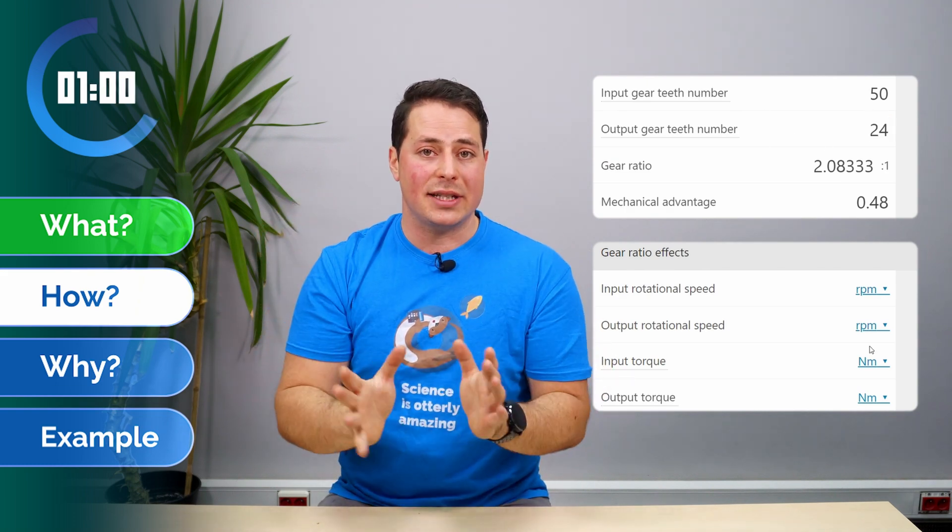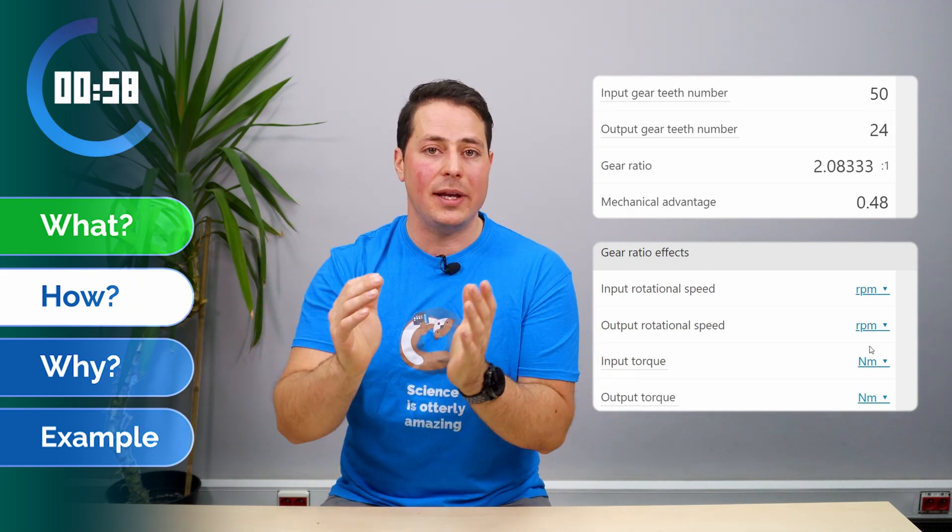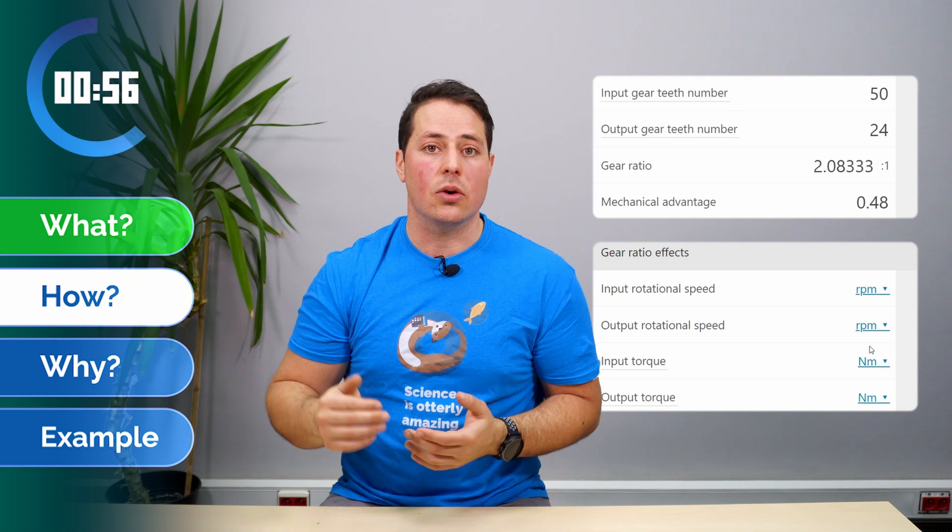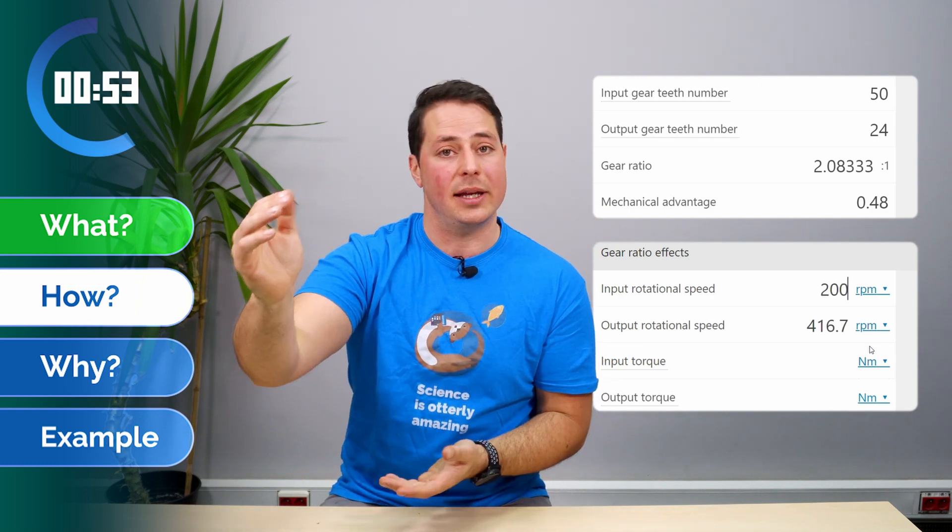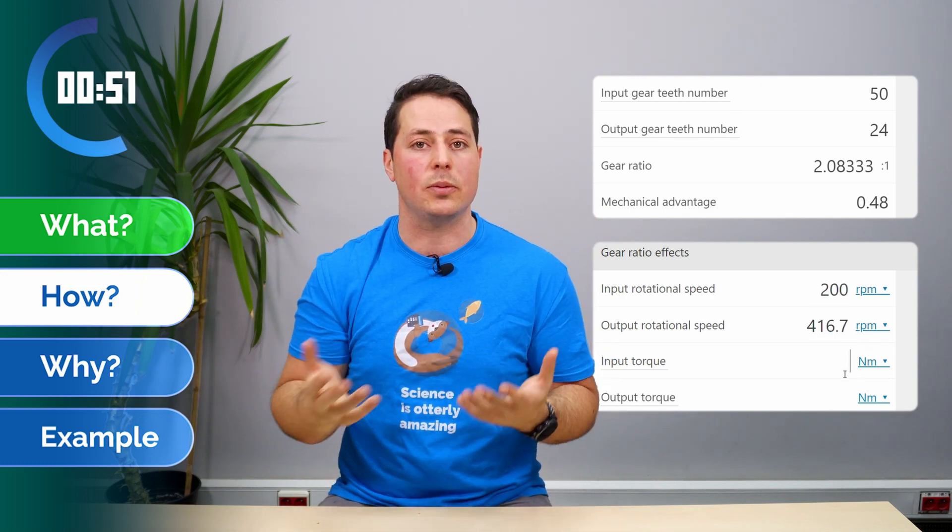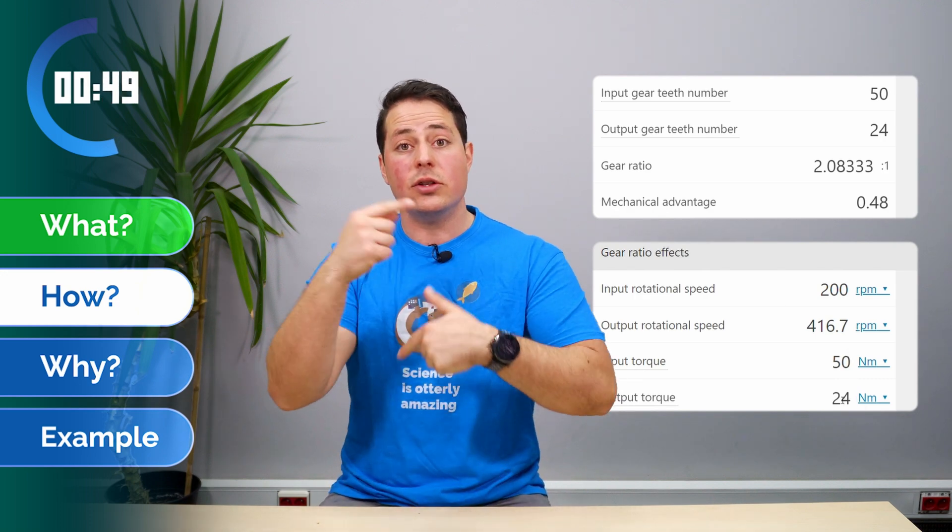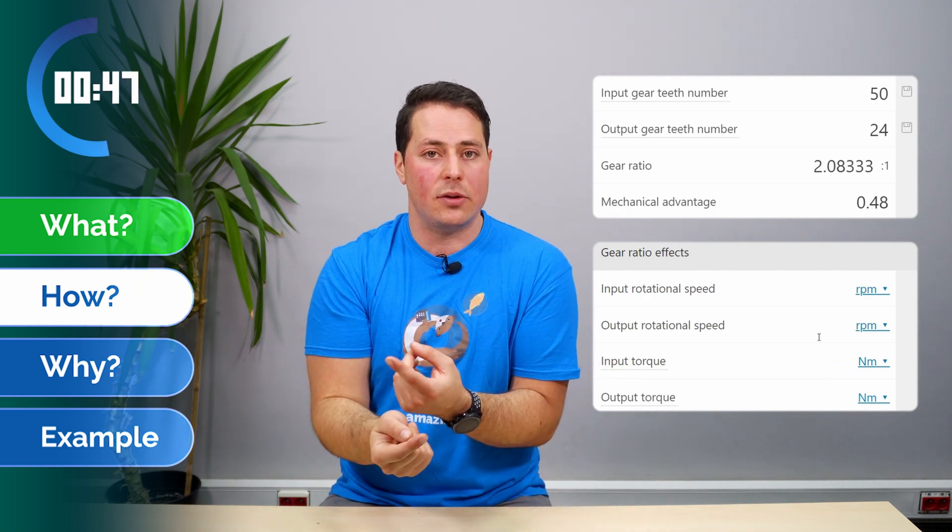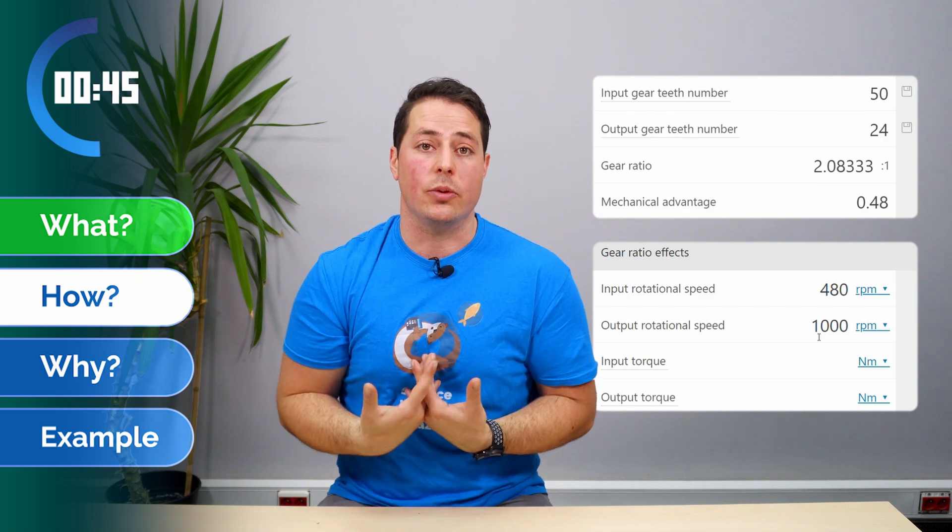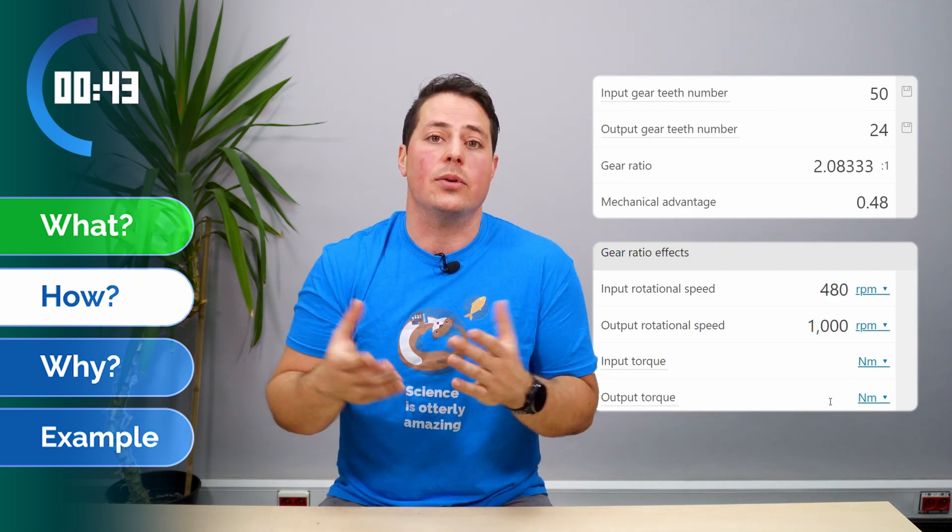We can move into the second section, where we have input and output speed and torque. When we have the gear ratio, just by putting the input speed or input torque, we can get the output speed or torque. We can also use this calculator in the opposite way—we can specify what output we want, and it will tell us what input we need.